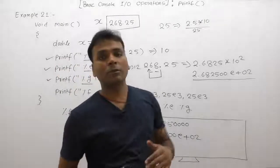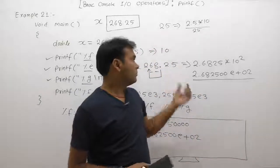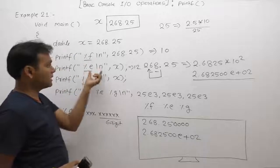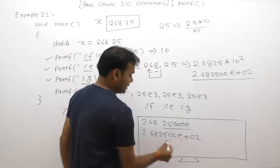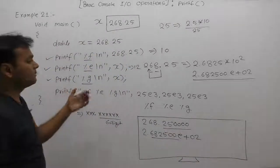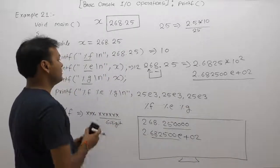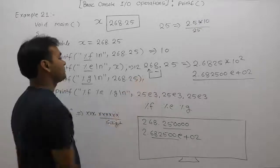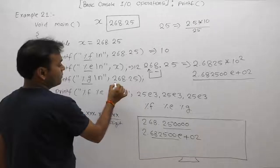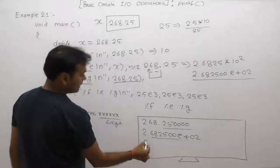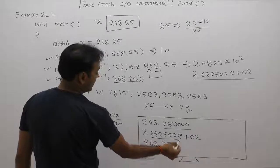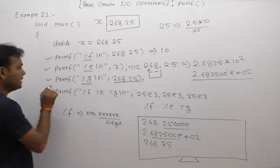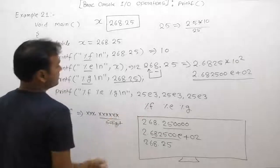The third case uses %g. With %g, the number is displayed with exactly the available number of decimal digits — this is a dynamic precision. Unlike %f and %e which always show six decimal places by default, %g shows only the significant decimal digits. So for x = 268.25, no trailing zeros are added; the number is displayed as 268.25.